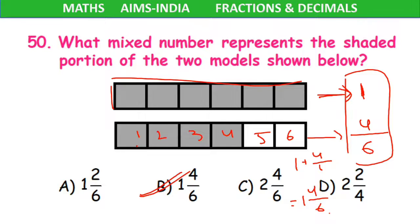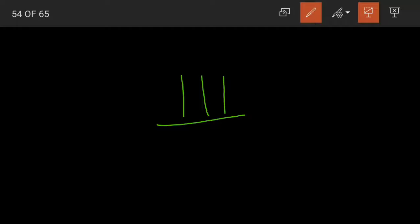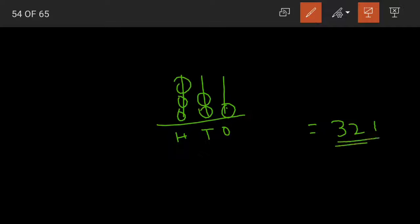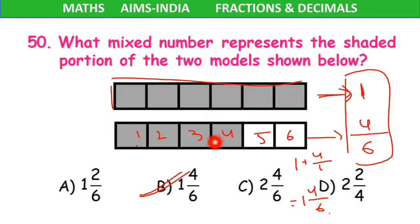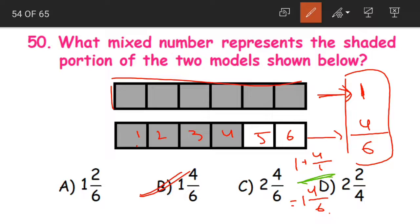You might have done problems like abacus problems — you used to have 1, 10, and 100 with a number of balls on each rod, and depending on that we used to write the number. In the same way, you just count the shaded parts and write the fractions together. 1 plus 4/6 is nothing but 1 and 4/6 — that is our option B.